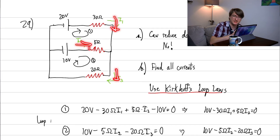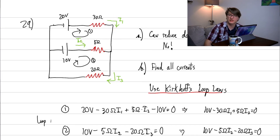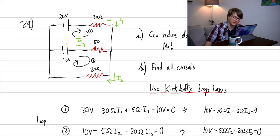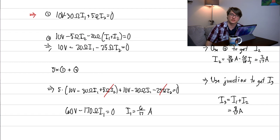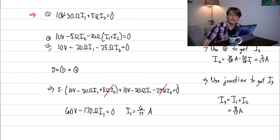All currents came out positive, meaning our initial direction guesses were correct. If any had been negative, we'd just flip that direction in the final answer — it doesn't affect correctness. That's everything for today. Thanks for joining, and good luck!